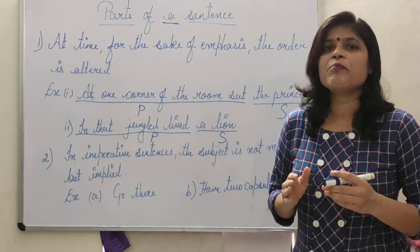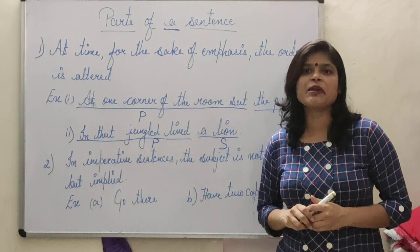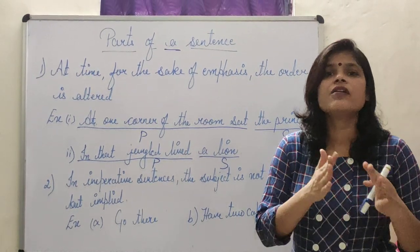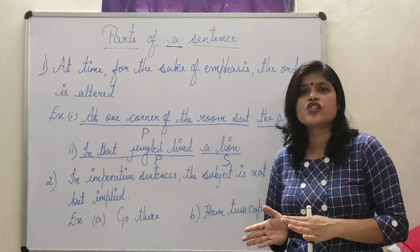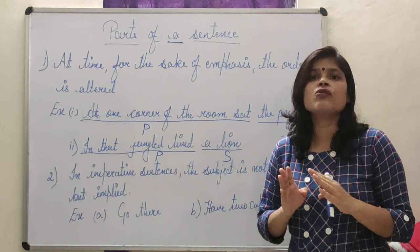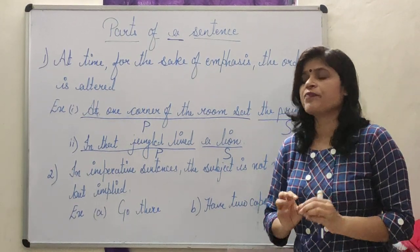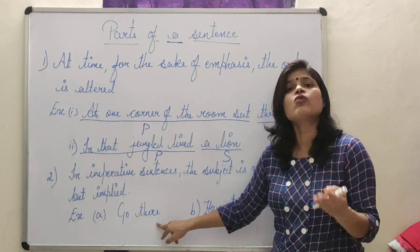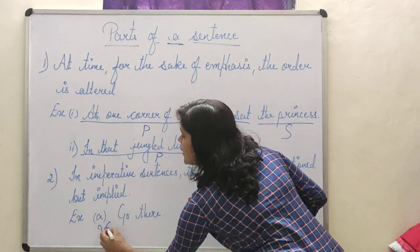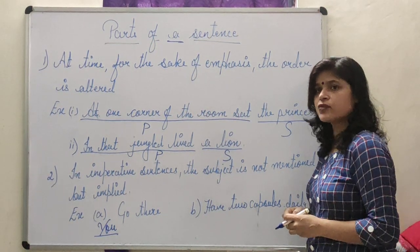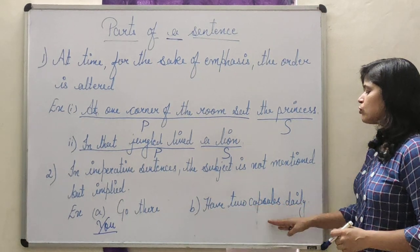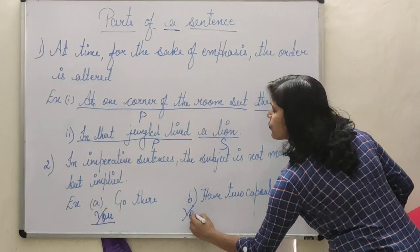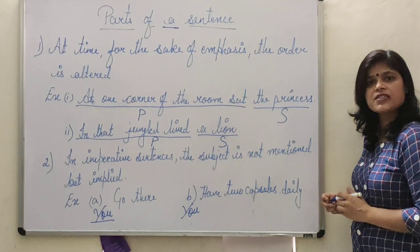In imperative sentences the subject is not mentioned but implied. Imperative sentences are those sentences which give a command, request, advice, suggestion, or order. In imperative sentences we do not write the subject — it is only implied. For example: 'Go there.' Someone has been ordered to go there, so 'you' is implied as the subject. Similarly, 'Have two capsules daily' — this is like a prescription, and here also the subject is 'you.'